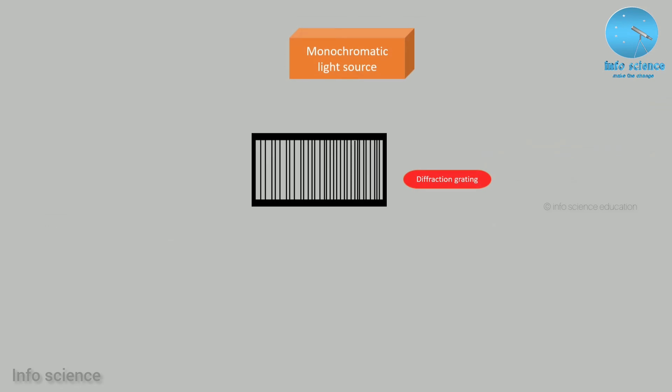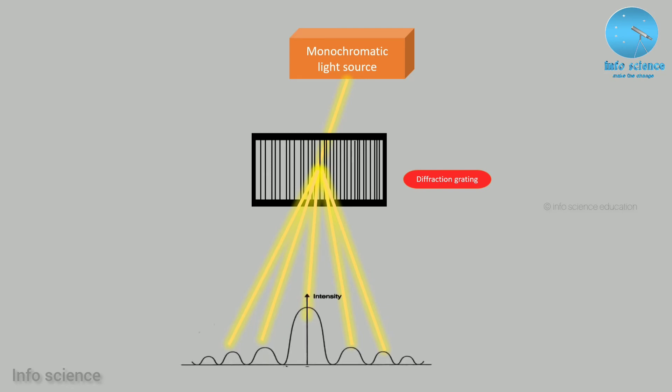Let's use a monochromatic light source and form the diffraction patterns. We start from the central maximum, then go left to the first order maximum, then the second order maximum, and on the right the first order maximum and second order maximum.